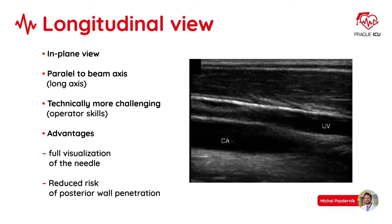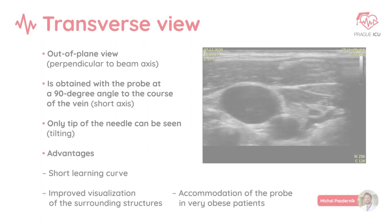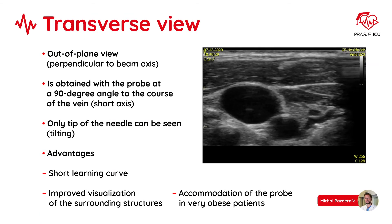Longitudinal view provides an in-plane view, parallel to the beam axis. This approach is technically more challenging, but it provides full visualization of the needle tip, which reduces the risk of posterior wall penetration. The transverse view — the so-called out-of-plane or short axis view — allows only the tip of the needle to be seen. We use tilting and shifting of the probe to get the correct image of the needle tip. There is a shorter learning curve, we can better visualize the surrounding structures, and we can comfortably accommodate the probe in obese patients.